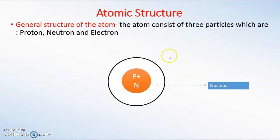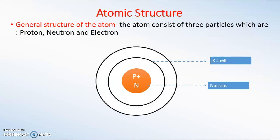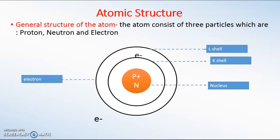The first shell is called the K shell, the second is called the L shell, then if there should be a third it is M, fourth is N, and so on in that order. It is along these shells that electrons move around the nucleus. This is the general structure of an atom: a nucleus made up of protons and neutrons, with electrons revolving around it.